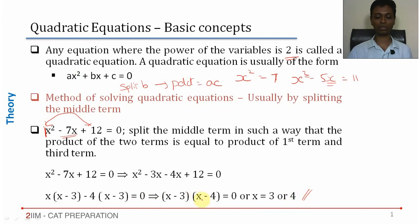Product of two terms is 0, one of them has to be 0. This is 0, x is 3. This is 0, x is 4. A very simple method, but get lots and lots of practice for this. This is going to lay the groundwork for a lot of questions.